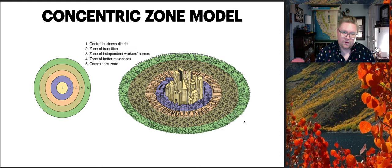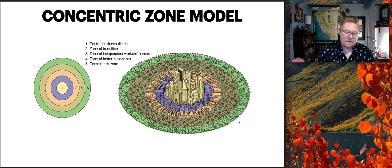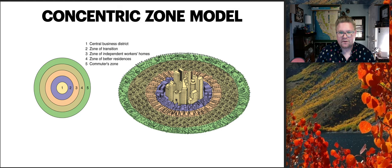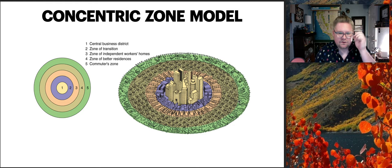These models aren't always perfectly designed, but what's interesting is how transportation has changed them. An international student unable to drive will want to rent within walking distance of everything, while someone with a vehicle can live farther out and commute in. Santa Clarita, for example, used to be considered a commuter zone because residents could commute to Cal State Northridge.